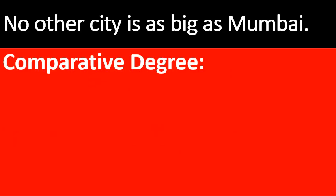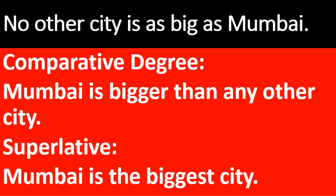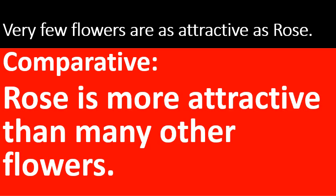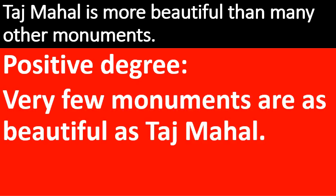Now rewrite into other degrees. No other city is as big as Mumbai — let us write it in comparative degree: Mumbai is bigger than any other city. Here 'big' becomes 'bigger' and you need to use the comparative word 'than'. Superlative: Mumbai is the biggest city. Very few flowers are as attractive as rose — comparative degree: Rose is more attractive than many other flowers. Taj Mahal is more beautiful than many other monuments — positive degree: Very few monuments are as beautiful as Taj Mahal.